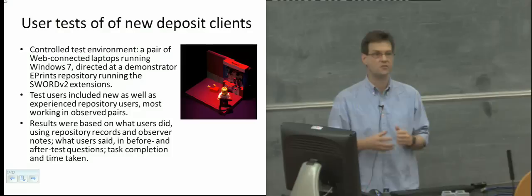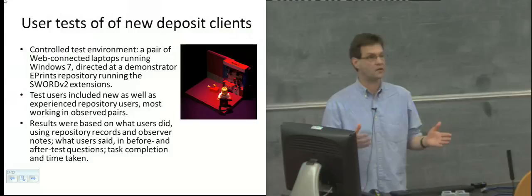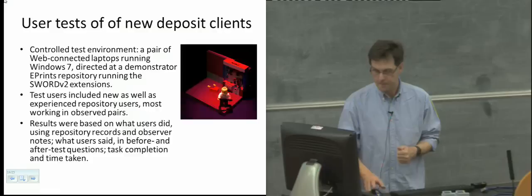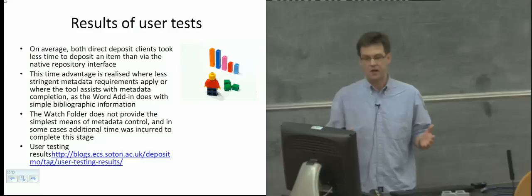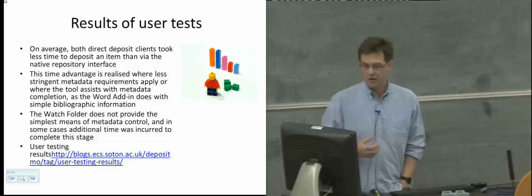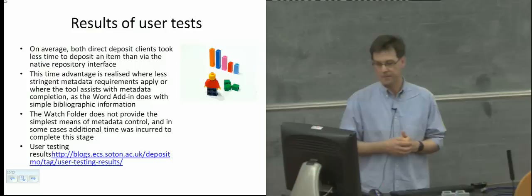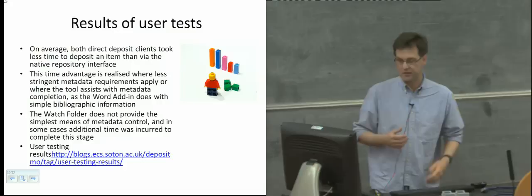The reason we put users in pairs is that when working individually in observed tests, there's no real means of interaction — as pairs, they talk to each other and you learn their immediate reactions to the process. We had a number of ways of measuring outcomes: observer notes including things users said, questionnaires completed before and after, task completion times and success rates, and extensive repository records of the users' work — which is itself an interesting research data management case.